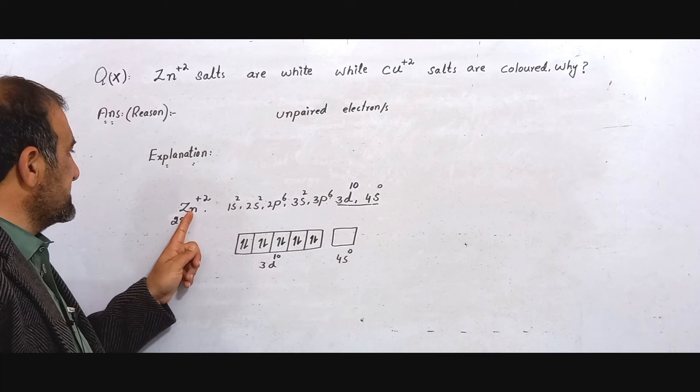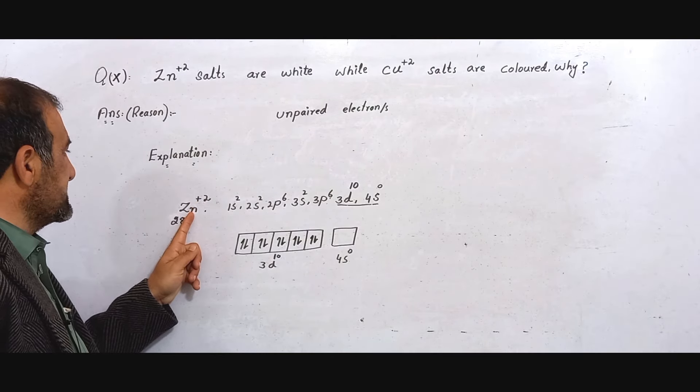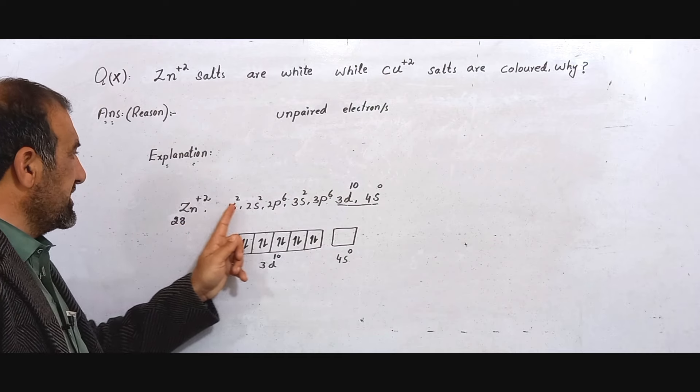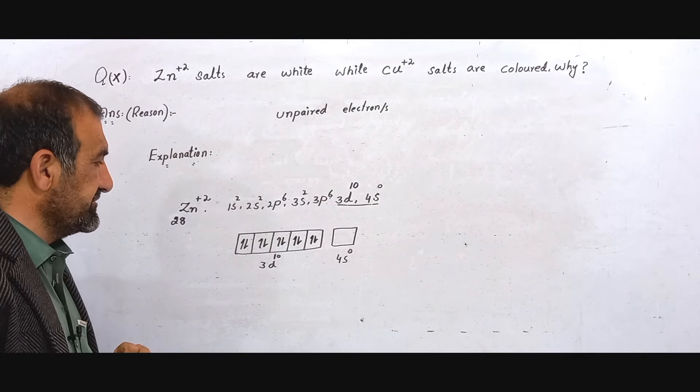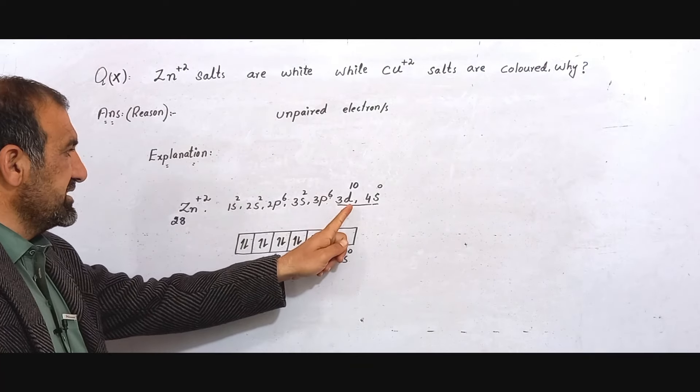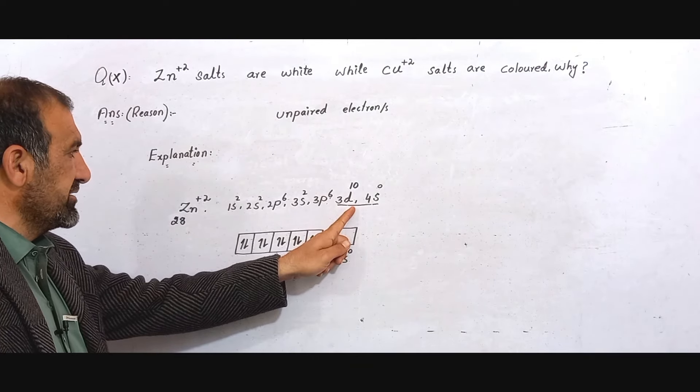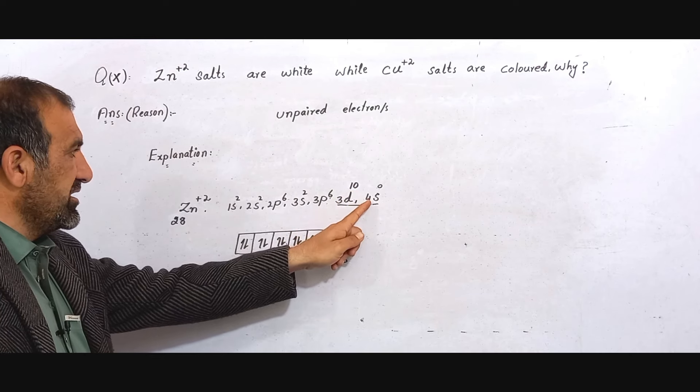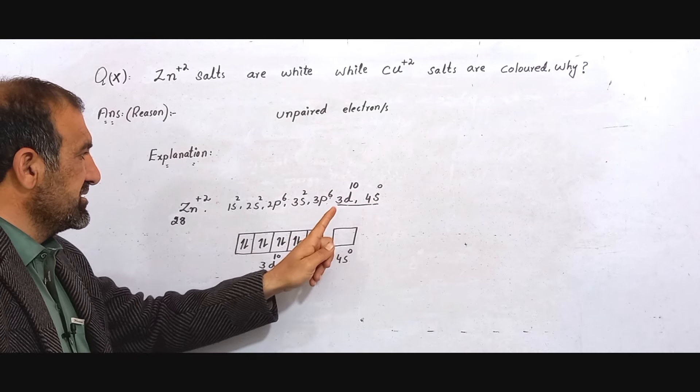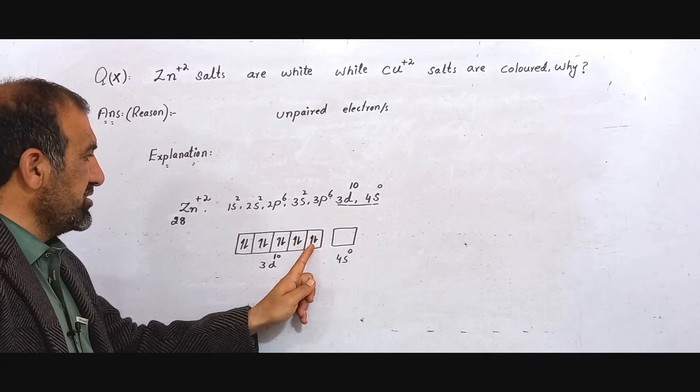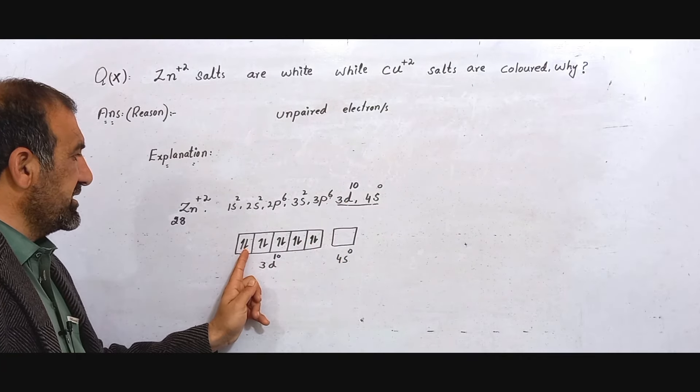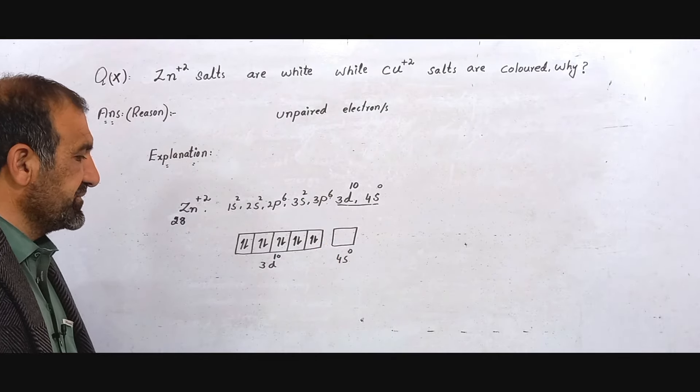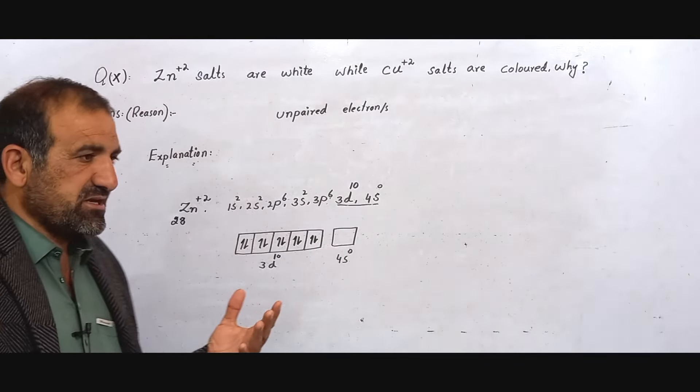This is Zn²⁺. Like zinc, total 30 electrons are present, but when it becomes Zn²⁺ there are 28 electrons. The electronic configuration shows the d sub-shell is completely filled, and the s sub-shell is completely empty. All electrons are paired in the d sub-shell, so no unpaired electrons remain.